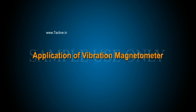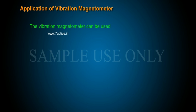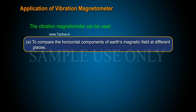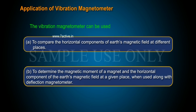Application of Vibration Magnetometer: The Vibration Magnetometer can be used A) to compare the horizontal components of Earth's magnetic field at different places, and B) to determine the magnetic moment of a magnet and the horizontal component of the Earth's magnetic field at a given place when used along with deflection magnetometer.